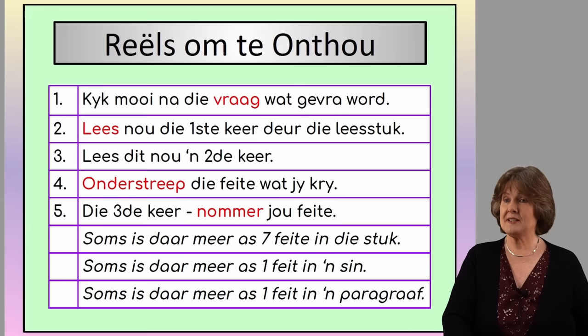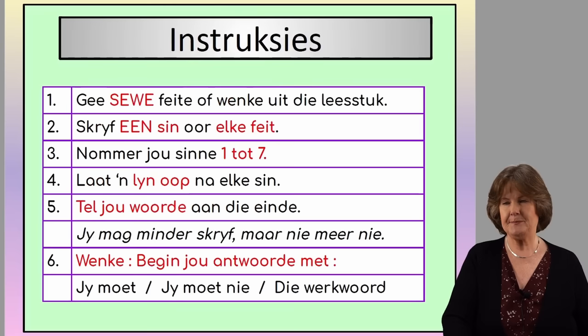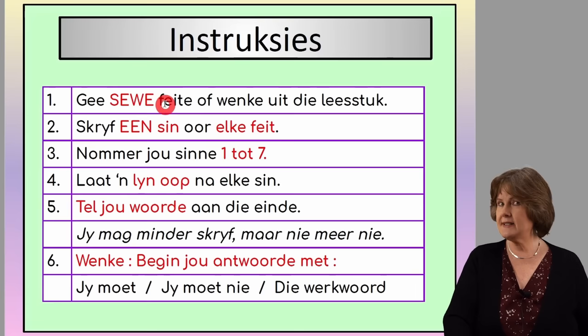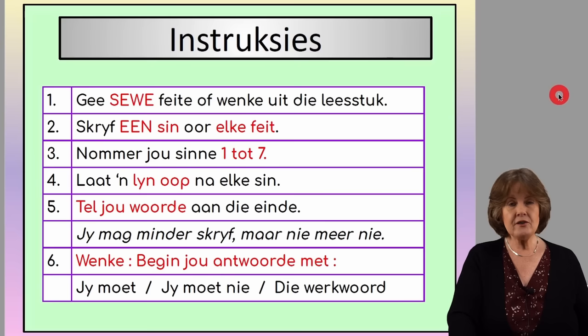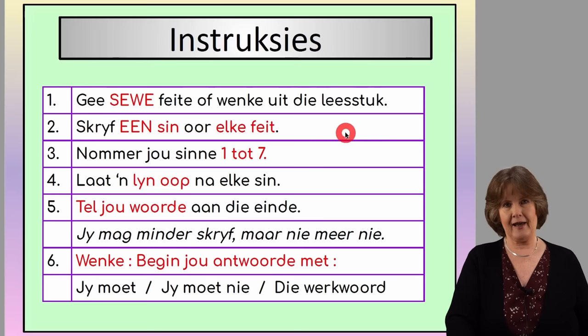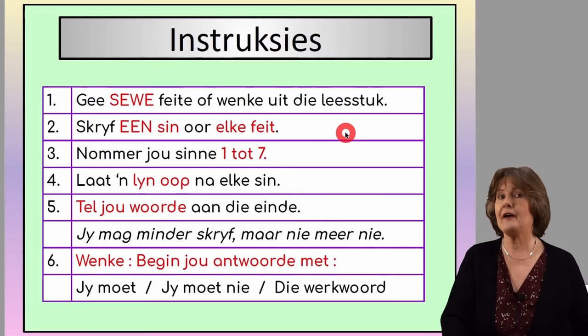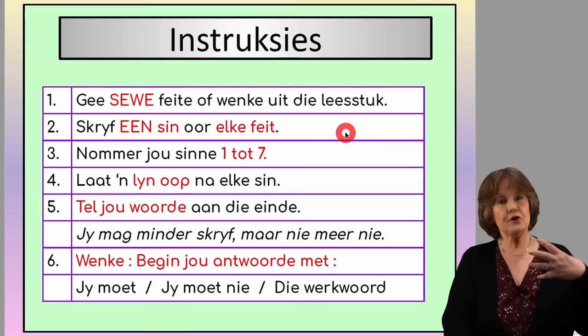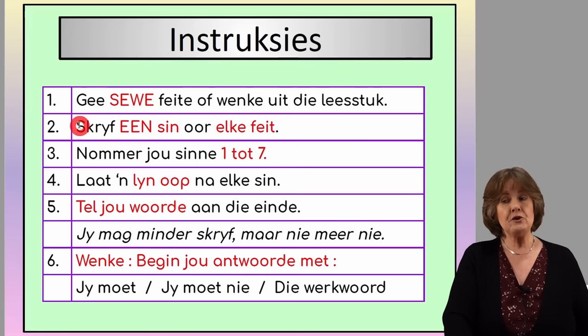Let me show you what the instructions on your paper would look like. They will ask you to give seven facts — it's always seven facts or suggestions from the passage. When you summarize, they want seven facts, instructions, or suggestions. Secondly, you write one sentence per fact. You have numbered your facts — say, for instance, throughout your passage you've got nine facts. You take the seven easiest ones. Even if there are three facts in one sentence, you take that fact out and write a short sentence around it.